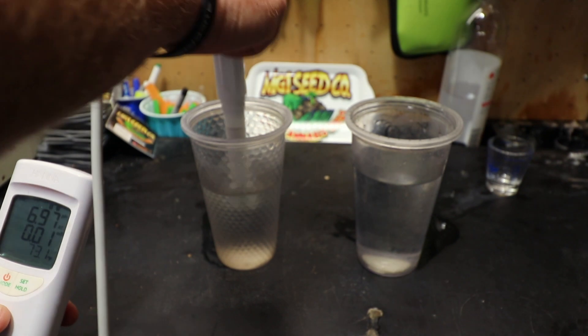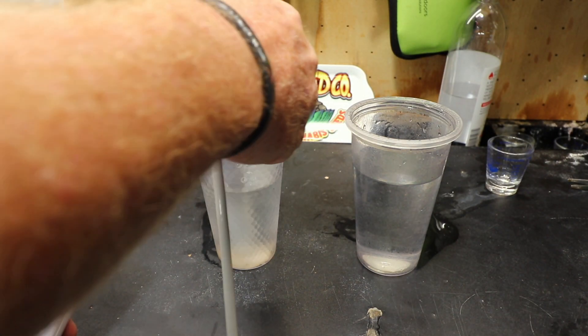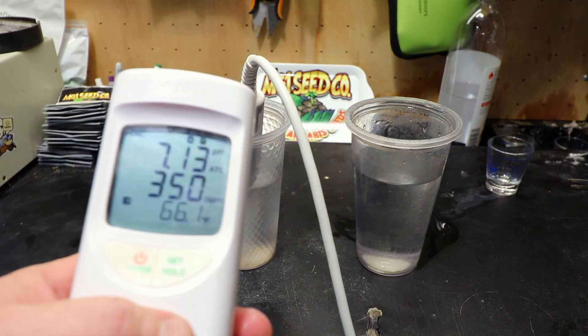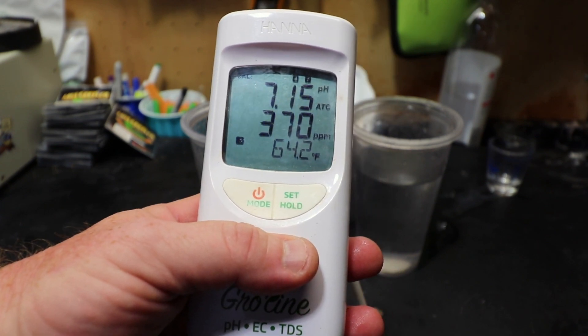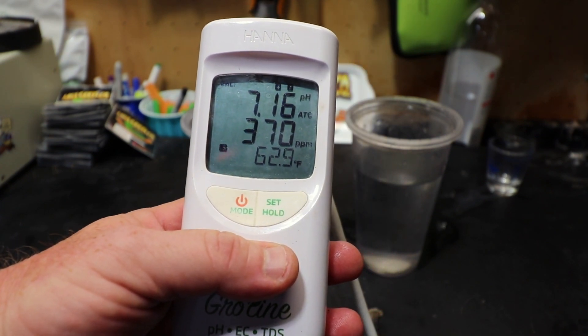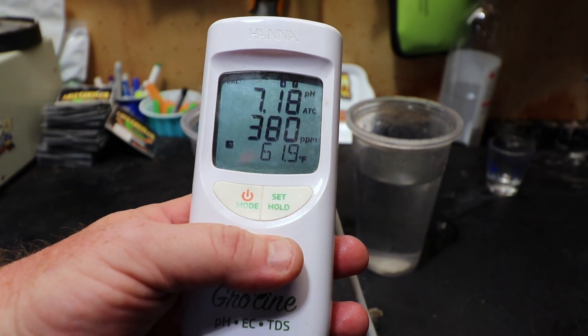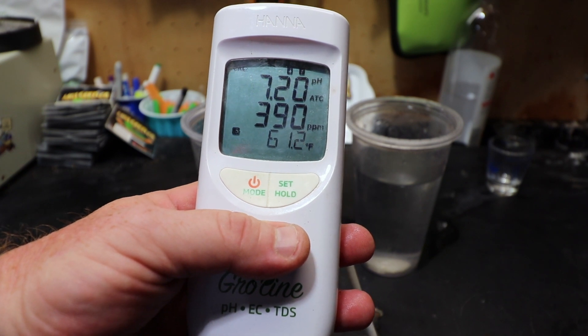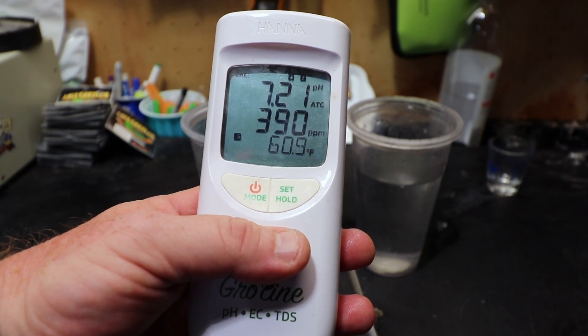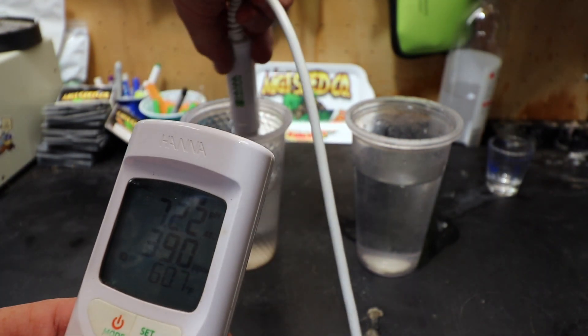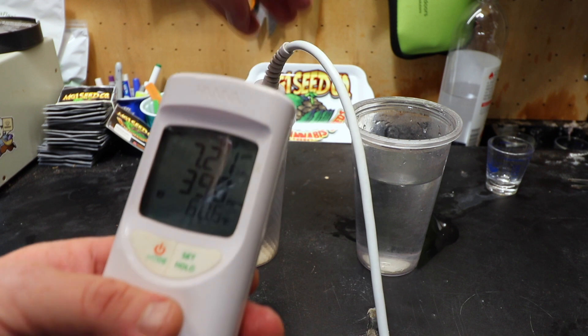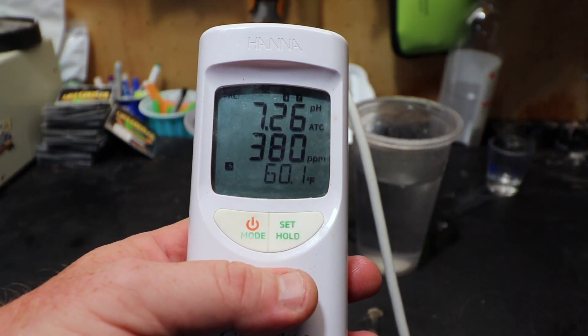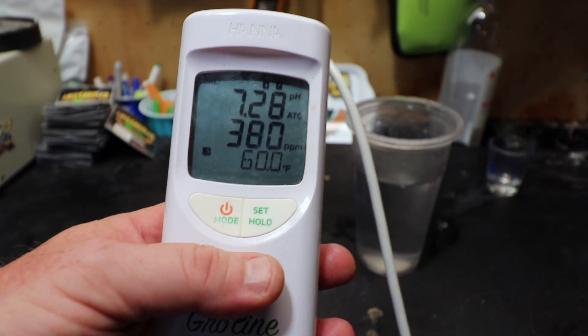See a lot of growers using this meter now. All right we're gonna go ahead and start with the well water first so we'll fire this bad boy up. Probably read a little bit because I just stuck it in the sink to rinse it off. All right let's stick it in, this is the well water. Change it to PPMs. All right that's what my well water is reading: 380, 390, 380. All right so it's 380 parts per million out of the well.